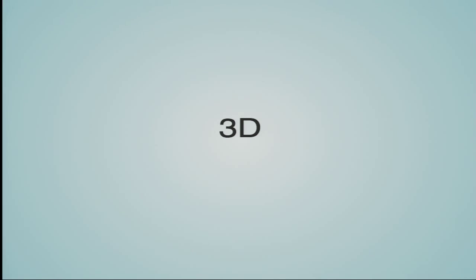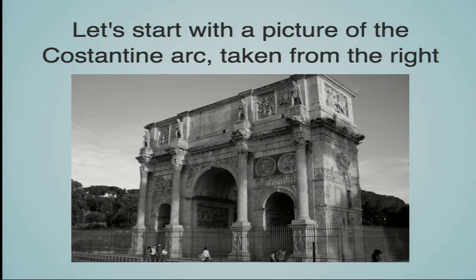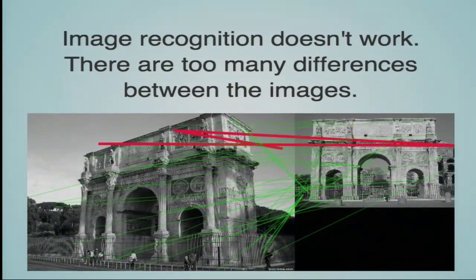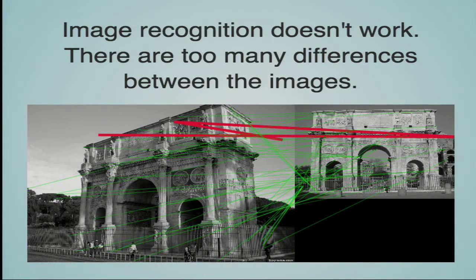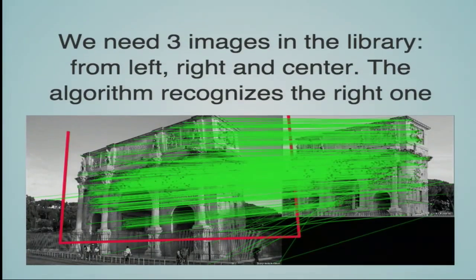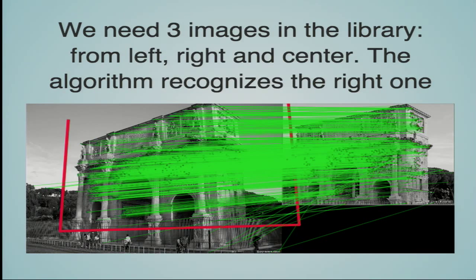We tested image recognition also in the 3D case. We start with a picture of the Arch of Constantine taken from the right. Image recognition in this case doesn't work because there are too many differences between the images. It works if the library also includes an image of the arch from the right. So we need at least three images in the library: from left, right, and center. Obviously we can apply this algorithm only in the case of fronts of objects which are very characteristic, such as arcs or churches — therefore, in the tourist case.